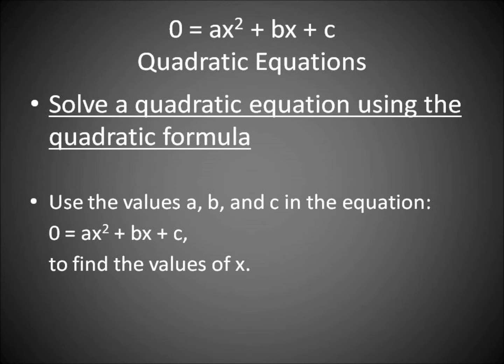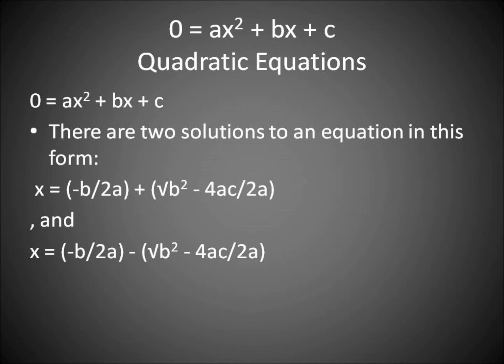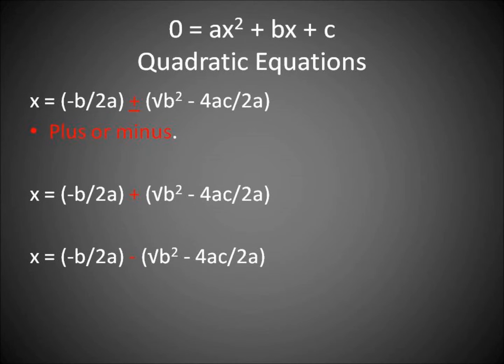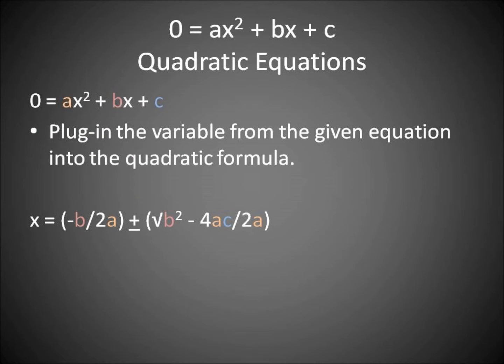Let's solve a quadratic equation using the quadratic formula: zero equals ax squared plus bx plus c. There are two solutions to an equation in this form. X equals negative b over 2a plus or minus square root of b squared minus 4ac over 2a. Remember this. We will have a plus or minus giving us two different answers.